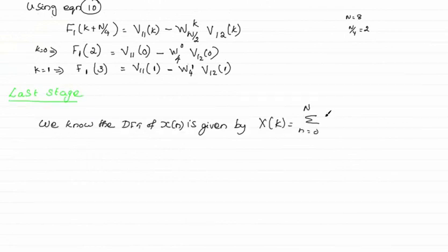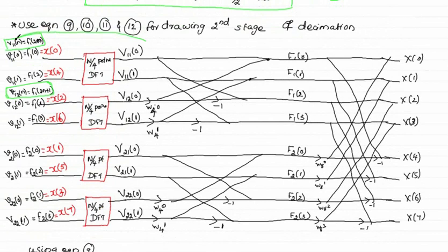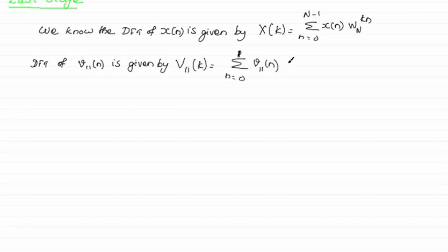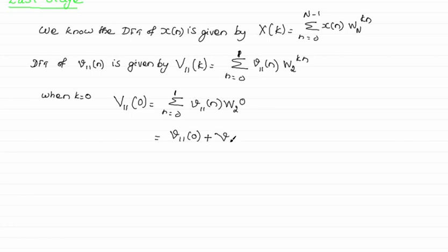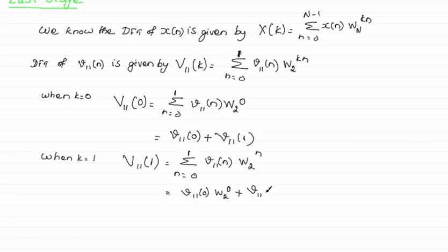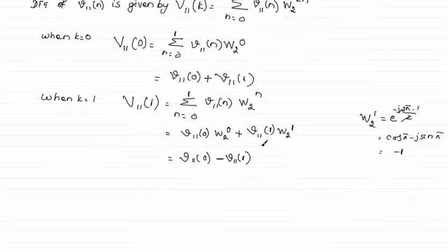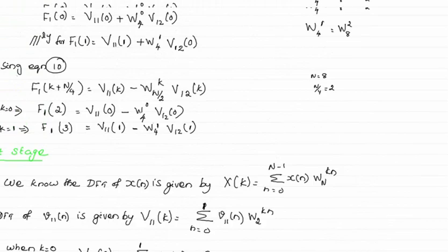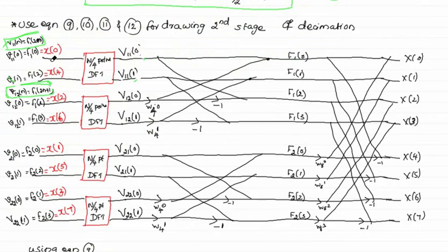Now let us see the last stage of decimation. The DFT of x[n] is X[k]. We take the first N/4-point DFT with input v11[n]. The DFT of v11[n] is V11[k], a 2-point DFT, so k = 0 and 1. When k = 0, W2^0 = 1, giving V11[0]. When k = 1, W2^1 = −1, giving V11[1]. We draw the 2-point DFT with input v11[n] and output V11[k], noting W2^0 = W4^0 = 1. Similarly we draw the remaining N/4-point DFTs.